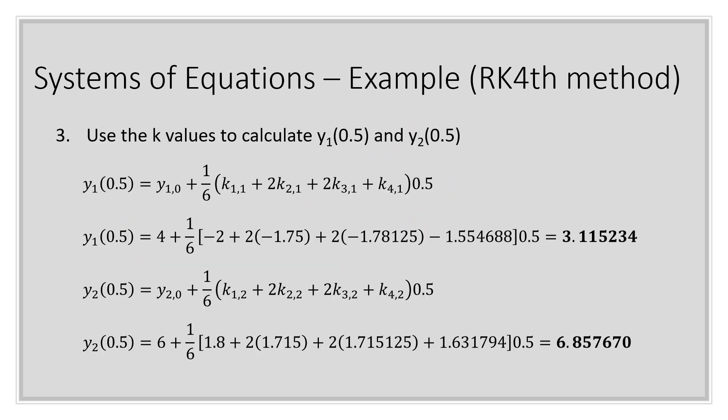This is the continuation of the calculation. Once you get all the k values, you can get y1 and y2. You need one full set of k1, k2, k3, k4 for y1, and another full set for y2. Remember to solve row by row.